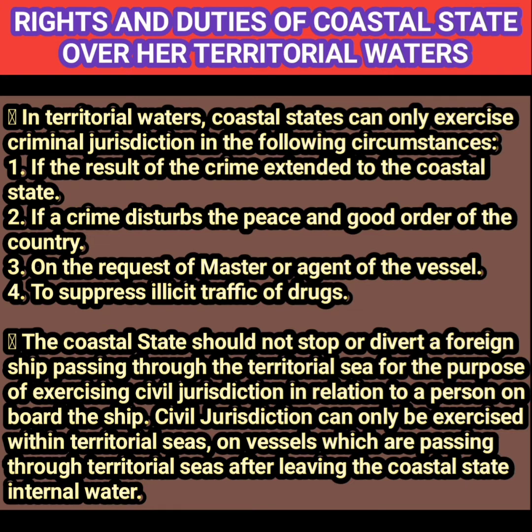In the territorial waters, the coastal state has the right to exercise criminal jurisdiction and civil jurisdiction. To exercise criminal jurisdiction, the following circumstances are required: if the result of the crime extends to the coastal state, or if the crime disturbs the peace and good order of the coastal state, or if the master of the ship or the agent of the vessel requests the coastal state to do so, or to suppress illicit traffic of drugs.